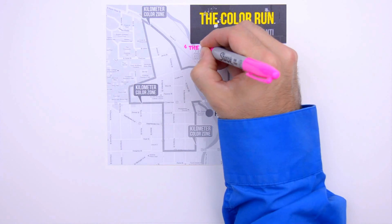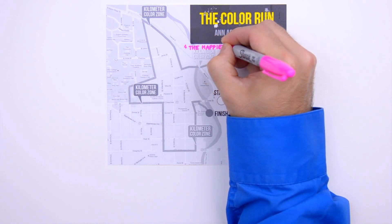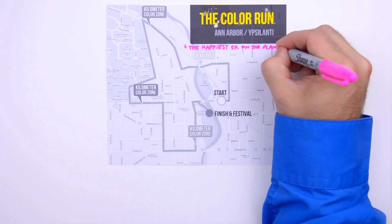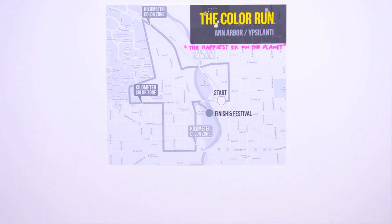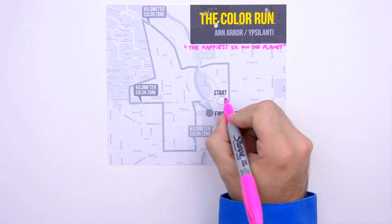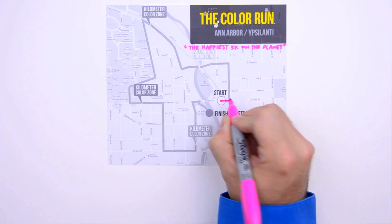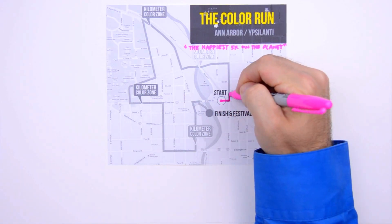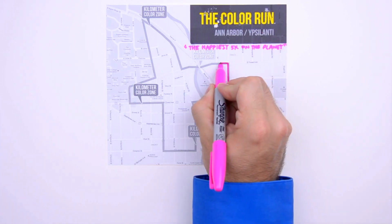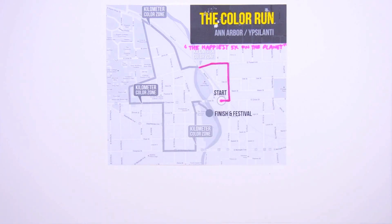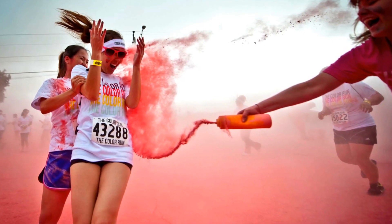The Color Run is aptly billed as the happiest 5k on the planet, and if you've ever attended a Color Run, you know what they're talking about. Color Runners leave the starting line in an old part of Ypsi known as Depot Town and proceed to jog around the city in a jagged loop — first heading east for a block, then north for a few blocks, then turning west. At this point, the runners celebrate the completion of their first kilometer by getting doused with colored cornstarch.